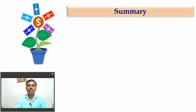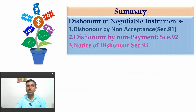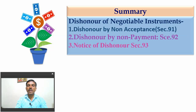Summary of this lecture: Dishonor of Negotiable Instrument means when the maker, drawer, or acceptor does not give payment to certain parties or the payee. Dishonor of Negotiable Instrument applies to dishonor of cheque, dishonor of promissory note, and dishonor of bill of exchange. Dishonor occurs in two ways: dishonor by non-acceptance under Section 91, which applies only to the bill of exchange, and dishonor by non-payment under Section 92, which applies to all negotiable instruments — bill of exchange, promissory note, and cheque.